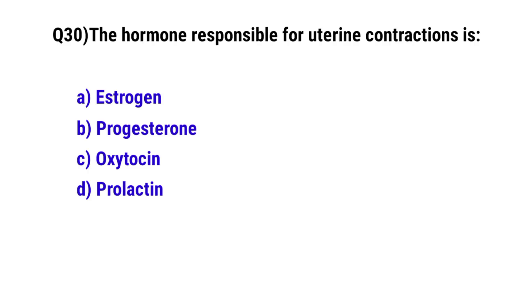Question No. 30. The hormone responsible for uterine contraction is? The correct option is C: Oxytocin.